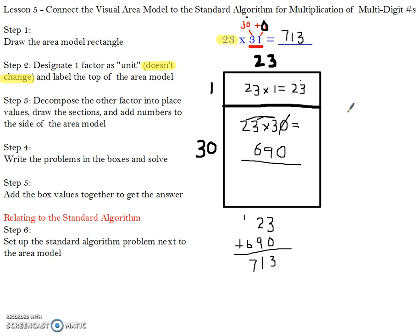Now we're going to think about relating this area model to the standard algorithm. So step 6 is you want to set up your standard algorithm right next to your area model, so it's easier to see the correlation. So I would do 23 times 31 off to the side.